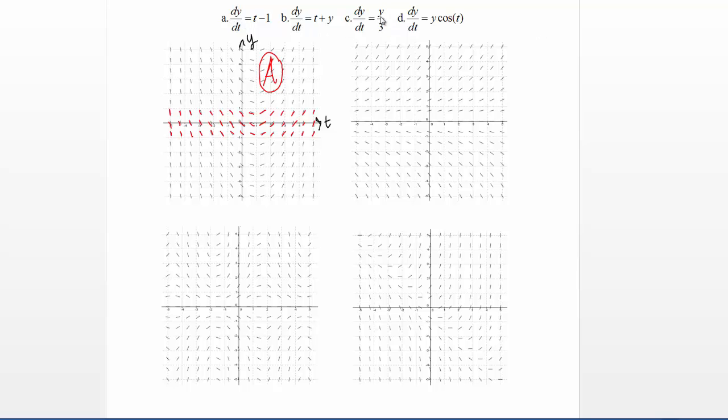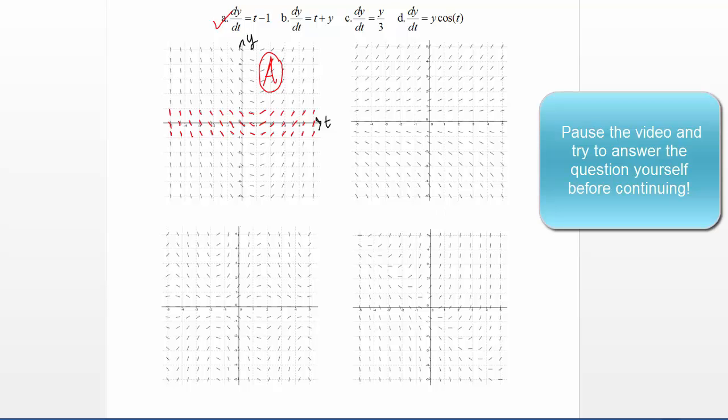Let's see if there's any other differential equations that maybe stand out to us. Look at C. C is kind of the same idea. C is only a function of y, so let's reason through what that would look like. If it's only a function of y, then my slopes should change in the y direction, but not in the t direction. Glance at our remaining three different direction fields here, and see if any of those stands out to you.